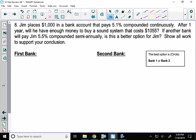Okay, so number 8. Jim puts $1,000 in a bank account that pays 5.1% interest compounded continuously. After one year, he wants to know will he have enough money to buy a sound system that costs $1,055. If another bank will pay Jim 5.5% interest compounded semi-annually, is that a better option? So basically, which bank should Jim go with?